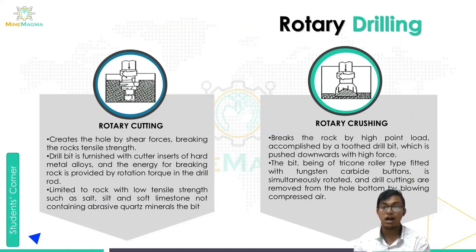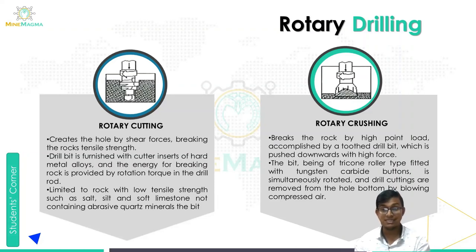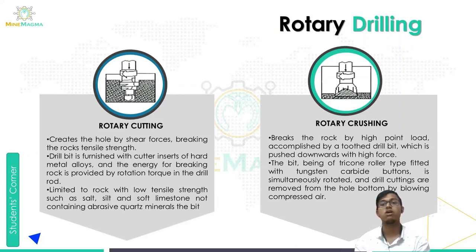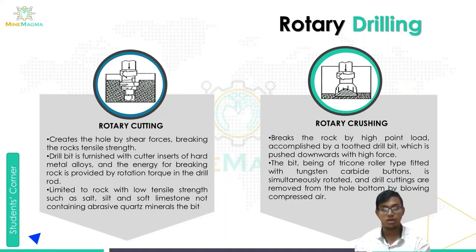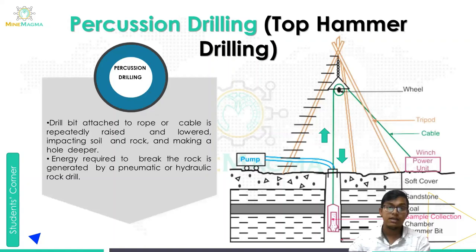In rotary crushing, rock is broken by a high point load accomplished by a tooth drill bit pushed downward with high force. The bit is of a tricone roller type fitted with tungsten carbide buttons, simultaneously rotated, and drill cuttings are removed from the hole bottom by blowing compressed air. So a tricone roller bit fitted with tungsten carbide buttons rotates under high force, and cuttings are removed with compressed air.